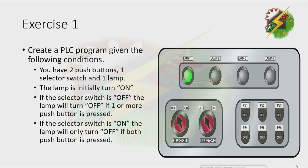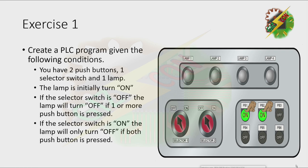The lamp is initially on. When I press PB1, the lamp will turn off. When I press PB2, the lamp will turn off also. And when I press both, the lamp will turn off again.